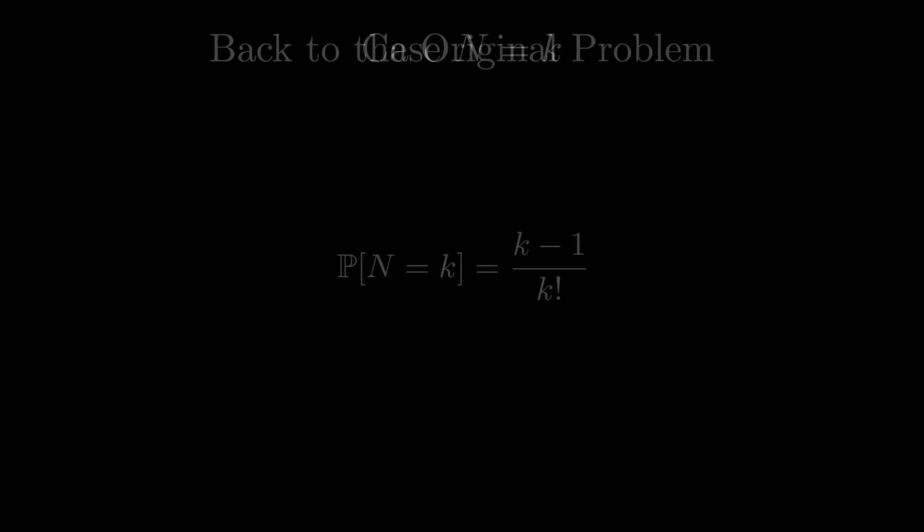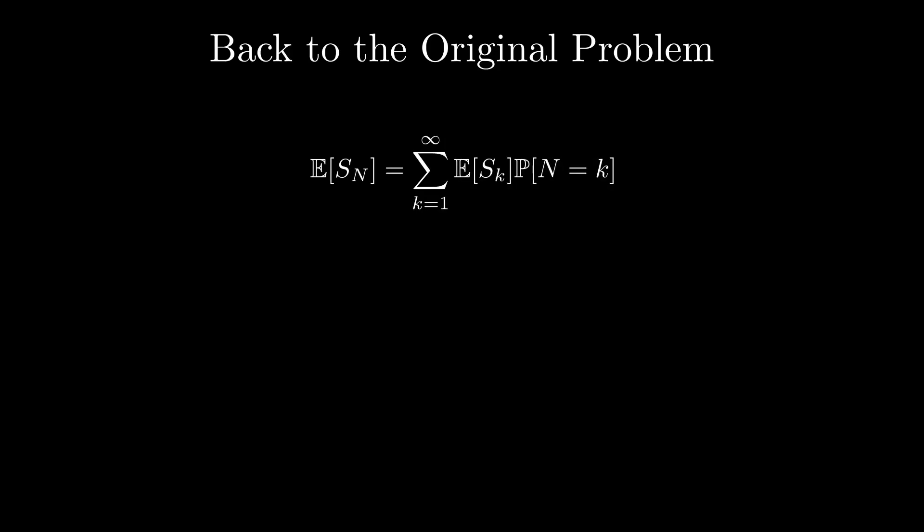Now back to the original problem. Just like what we did at the start of the video, we can decompose the expected value of S big N into the sum from k equals 1 to infinity of the expected value of Sk times the probability that big N equals k. The expected value of each Xk is just 1 half. So the expected value of the sum is 1 half times k. Then we input the probability formula we have found into the equation as well.